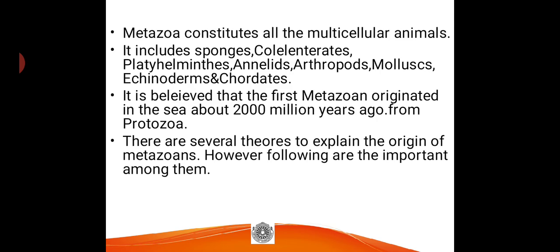Metazoa includes sponges, cnidarians, platyhelminthes, nematodes, annelids, arthropods, mollusks, echinoderms, and chordates. Except phylum Protozoa, the rest of the animals are grouped under Metazoa. It is believed that the first metazoan originated in the sea about two thousand million years ago from protozoans or protozoan-like ancestors. There are several theories to explain the origin of metazoans.